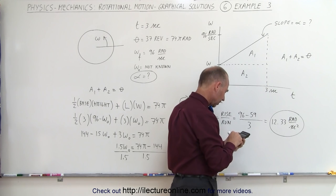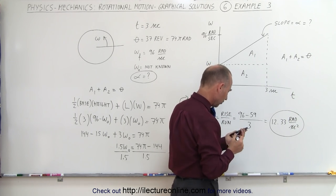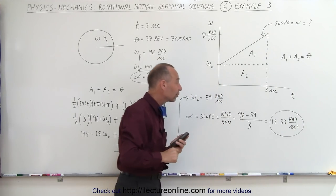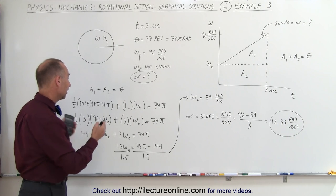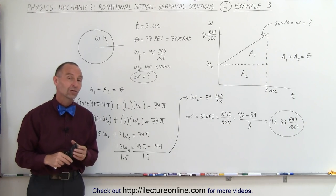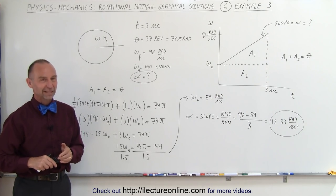Again, let me try it again. 96 minus 59 divided by 3, and sure enough, 12.33 radians per second squared. And notice again, using the graphical techniques, it's relatively easy to find solutions to quite complicated rotational motion problems. And that's how it's done.